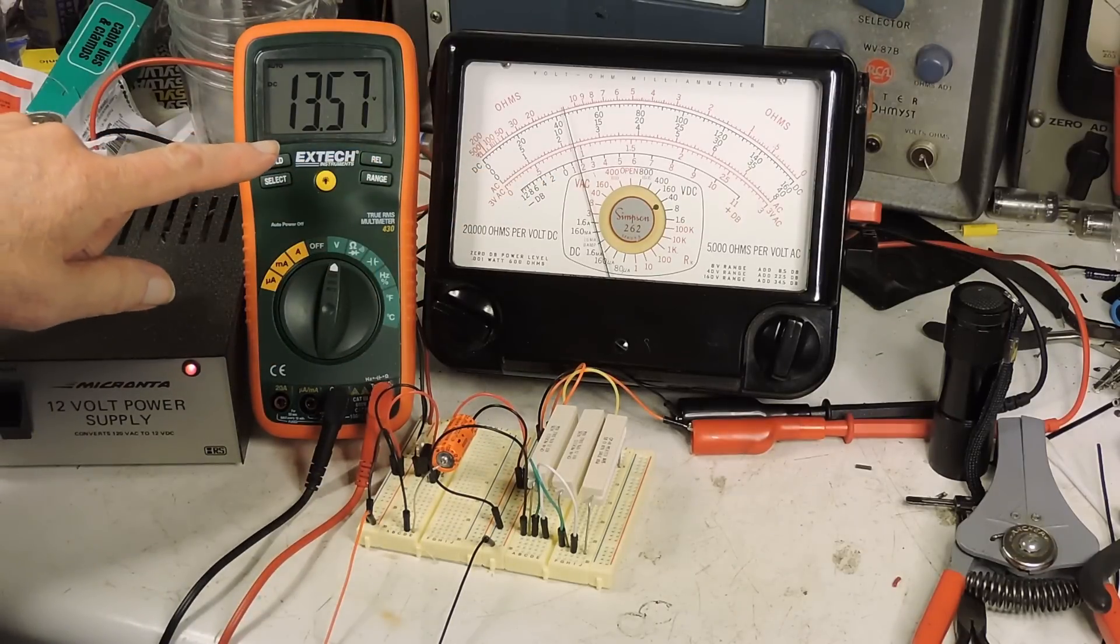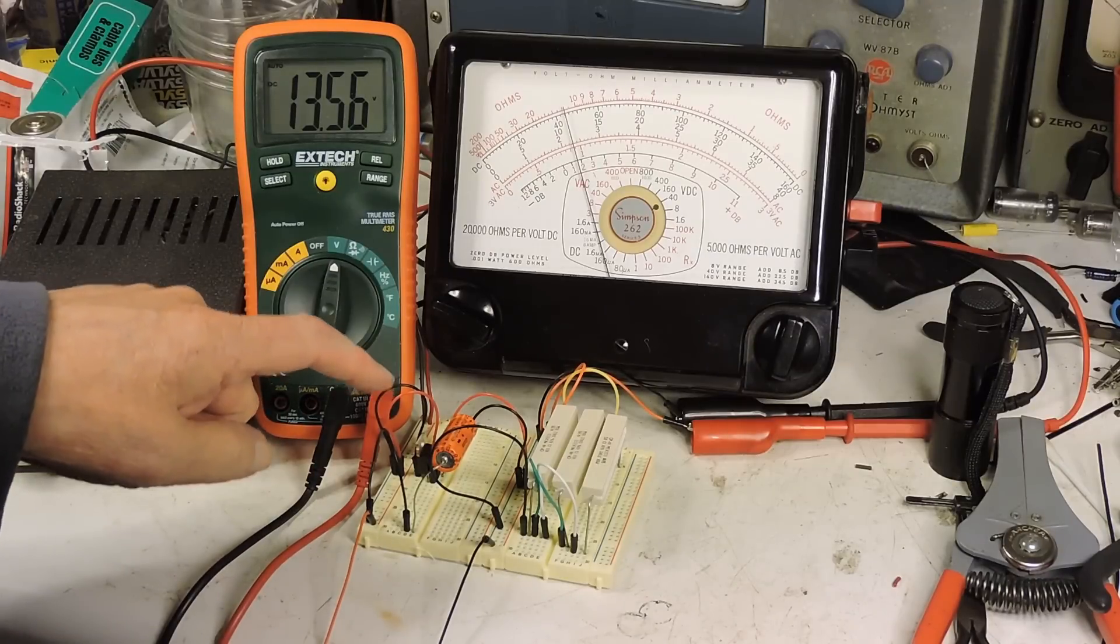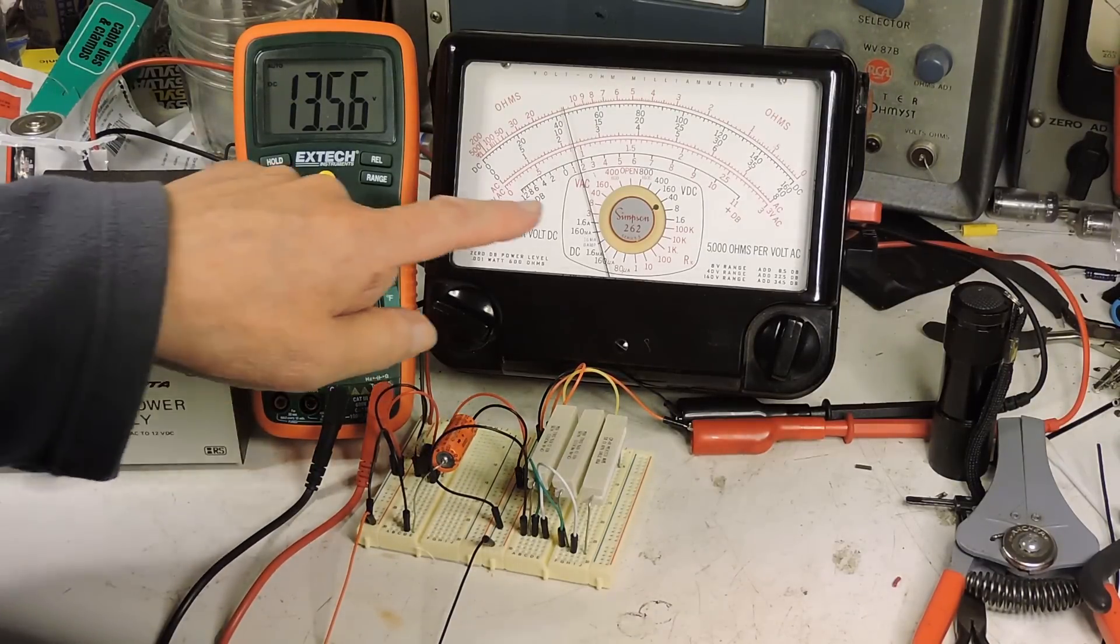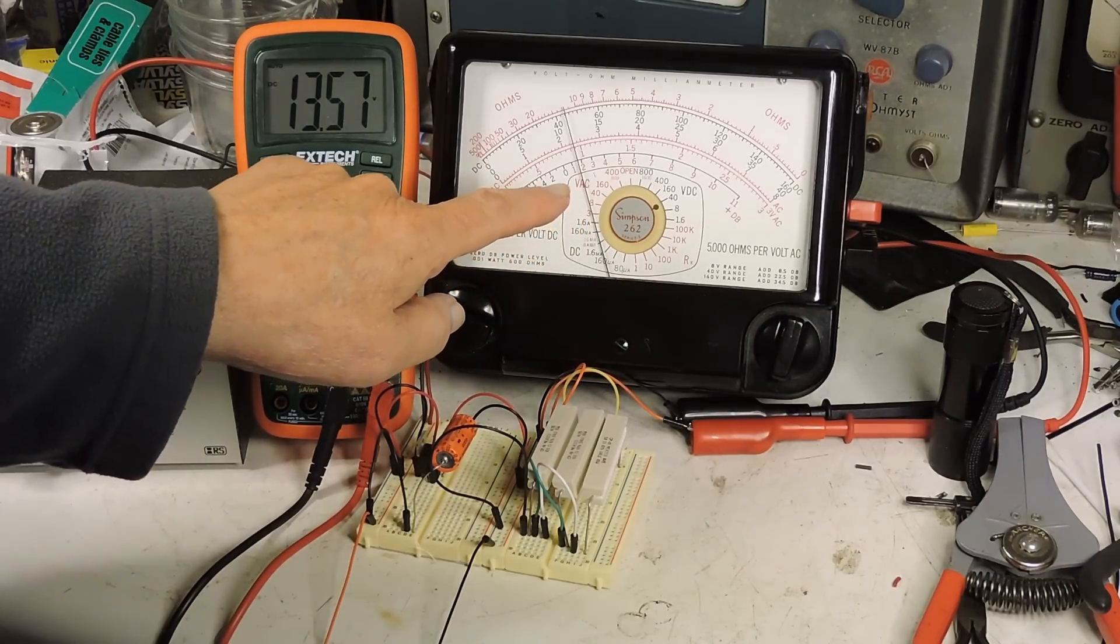And quite a bit of movement over here. So this regulator is changing its resistance to keep this side at 12 volts.